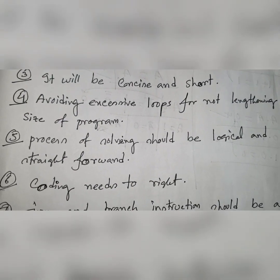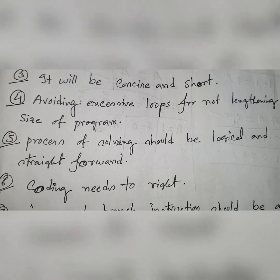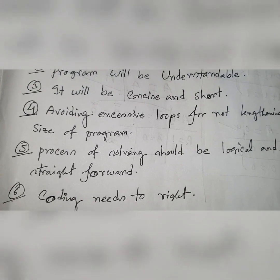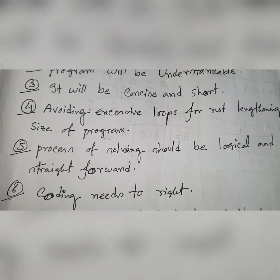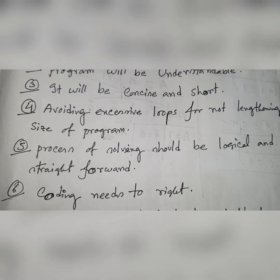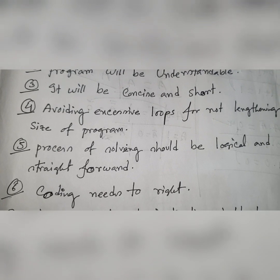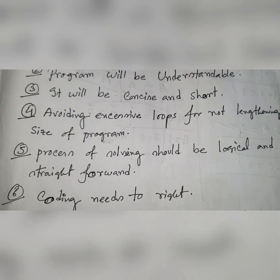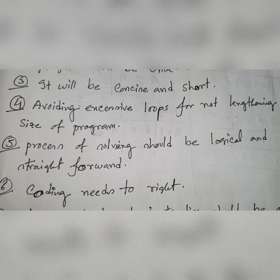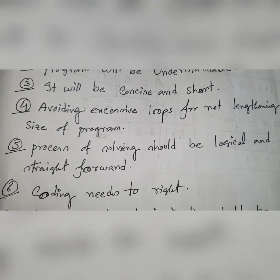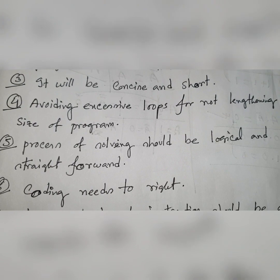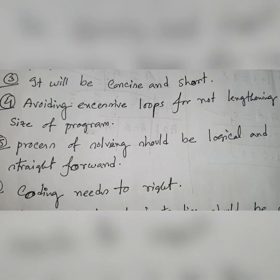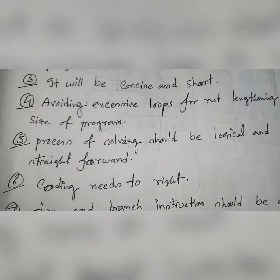Number five, the process of solving should be logical and straightforward. The process you follow to solve a program must be logical. You cannot implement any illogical step or illogical function that doesn't belong with the solution you are making for a specific problem. It must be logical and straightforward — no unnecessary elaboration or unnecessary enhancement of your program is allowed.